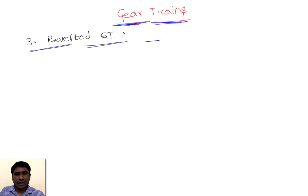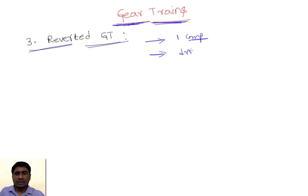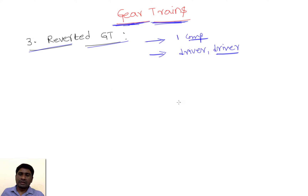In the reverted gear train, we have one compound shaft — that means on a single shaft we have two gears. Another condition is that the driver and driven shafts are collinear, meaning their shaft axes are collinear. Taking these two conditions into consideration, we can draw a simple reverted gear train.